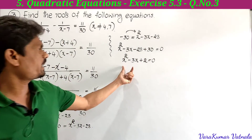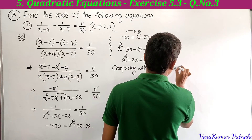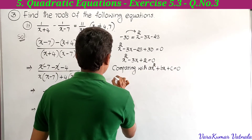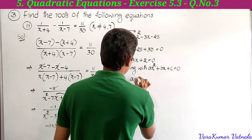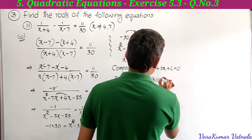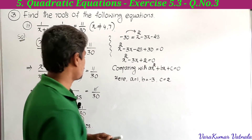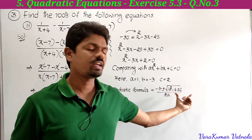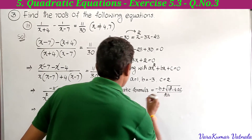Now it is in the form ax squared plus bx plus c equal to 0. Comparing x squared minus 3x plus 2 equal to 0, we get a is equal to 1, b is equal to minus 3, and c is equal to 2. We substitute these values in the quadratic formula: minus b plus or minus square root of b squared minus 4ac, divided by 2a.